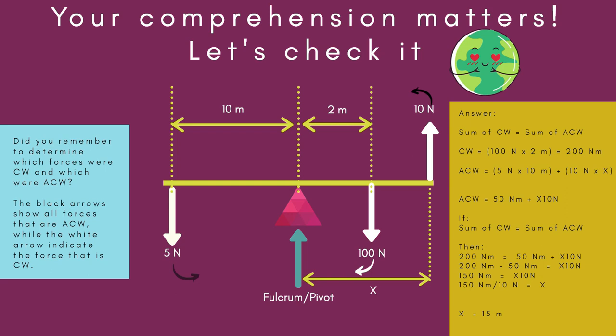Answer. The sum of all clockwise moments is equal to the sum of all anti-clockwise moments. So, clockwise moments is equal to 100 Newtons times 2 meters. Which is equal to 200 Newton meters. The anti-clockwise moments is equal to 5 Newtons times 10 meters. Plus, 10 Newtons times X. So, here we have a combination of forces acting in clockwise direction.